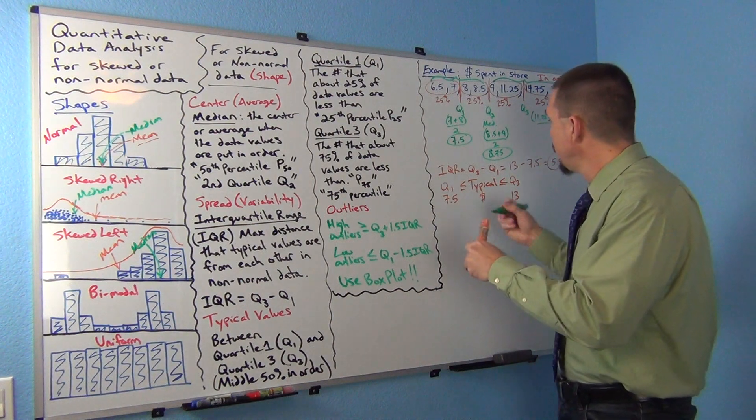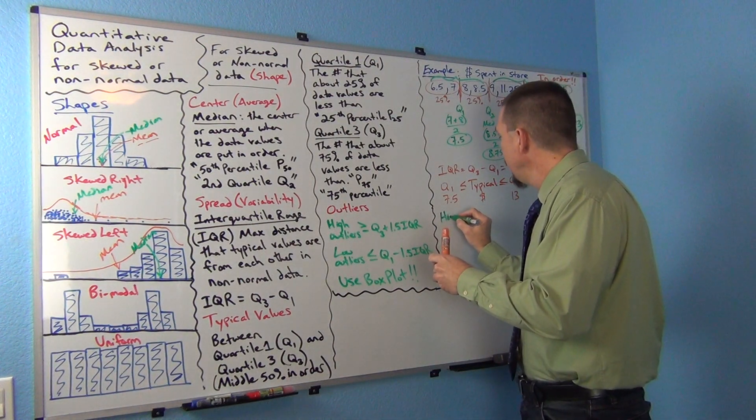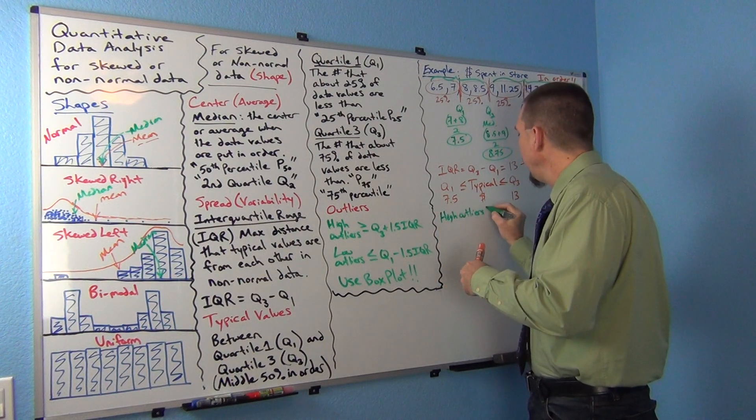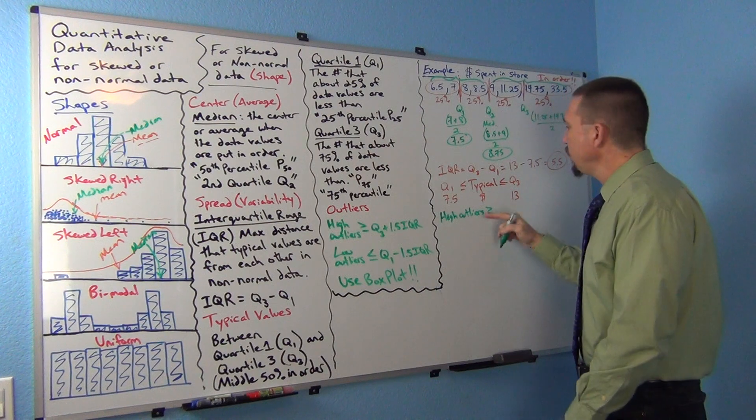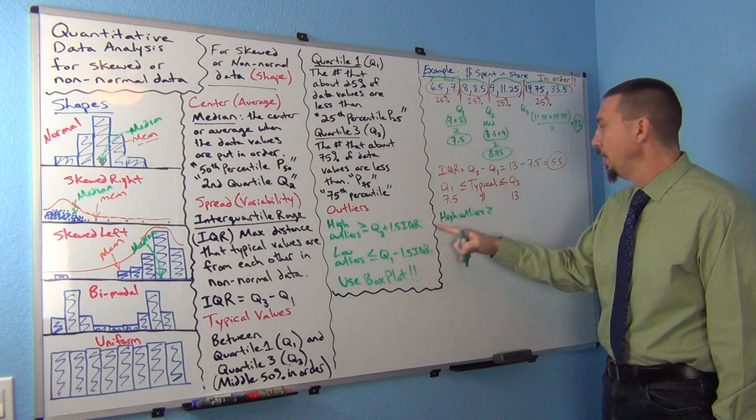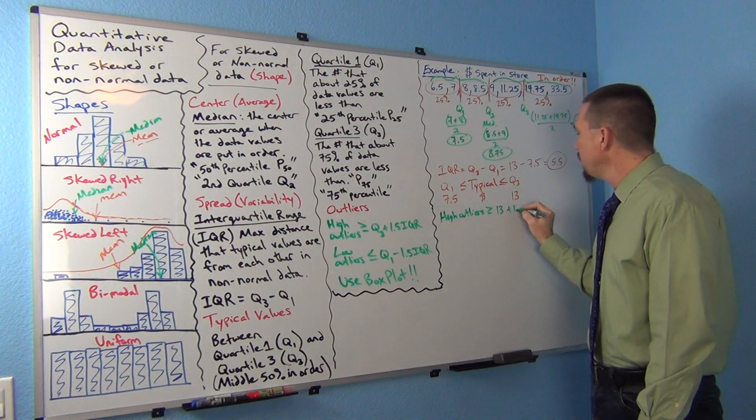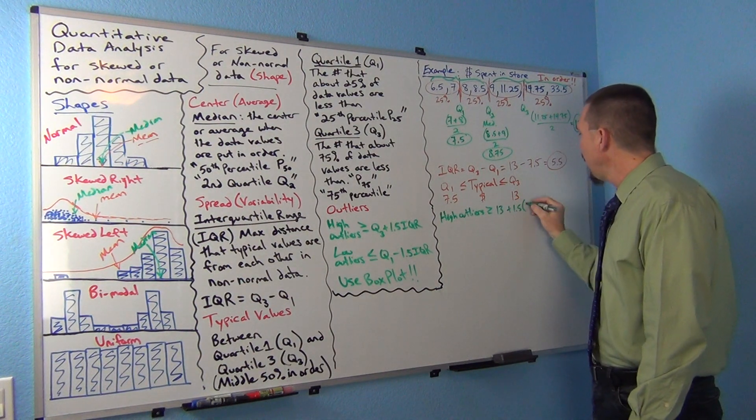Our high outliers would be anything greater than or equal to quartile 3 plus 1.5 IQR. So quartile 3 was 13 plus 1.5 times 5.5.